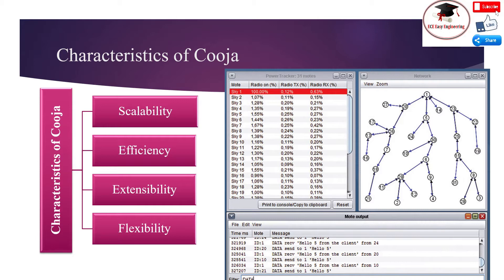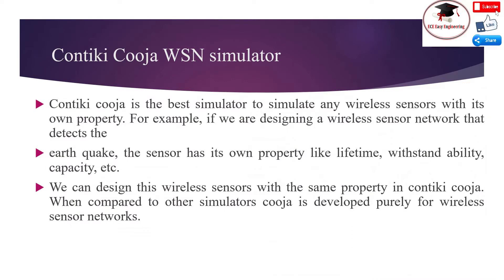Cooja is a powerful tool for wireless sensor networks that allows you to simulate an idea before it is implemented in real time. The Contiki Cooja WSN simulator is mainly used to simulate many wireless scenarios. For example, if we are designing a wireless sensor network that detects earthquakes, the sensor has its own properties like lifetime, withstand ability, and capacity.